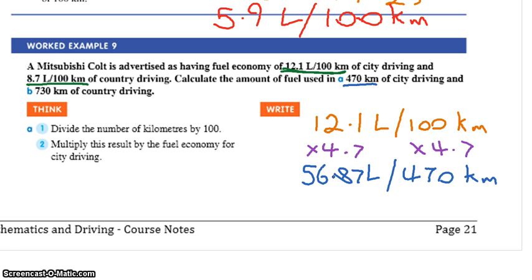So 56.87 litres per 470 kilometres, that's city driving. So that question says how much fuel is used for 470 kilometres of city driving? You can say it uses 56.87 litres for 470 kilometres of city driving. Happy with that?